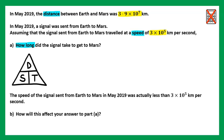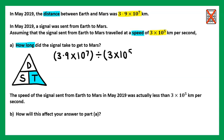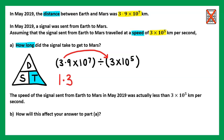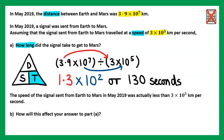Speed equals distance divided by time. Because they're asking us how long the signal took, that refers to time. Covering time up tells us we need to do distance divided by speed. Our distance is three point nine times ten to the power of seven, divided by our speed of three times ten to the power of five. Three point nine divided by three is one point three, and ten to the power of seven divided by ten to the power of five is ten to the power of two. Because the question didn't tell us to leave our answer in standard form, we could write this as one hundred and thirty seconds instead.